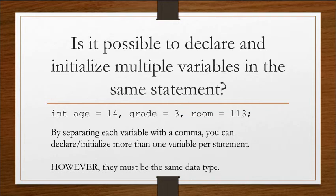Notice that int appears at the very beginning of the statement. That means that age, grade, and room are going to be int type. You can't initialize multiple at the same time. Notice how age has its own equals 14 and grade has its own equals 3 and room has its own equals 113. They must be initialized separately, but they can be declared on the same line.